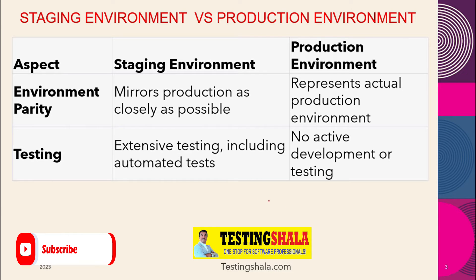The next key difference is environment parity. In the staging environment, we mimic or mirror the production environment as much as possible — we try to simulate production in staging. But the production environment actually represents the real production environment. That is a key difference between staging and production.